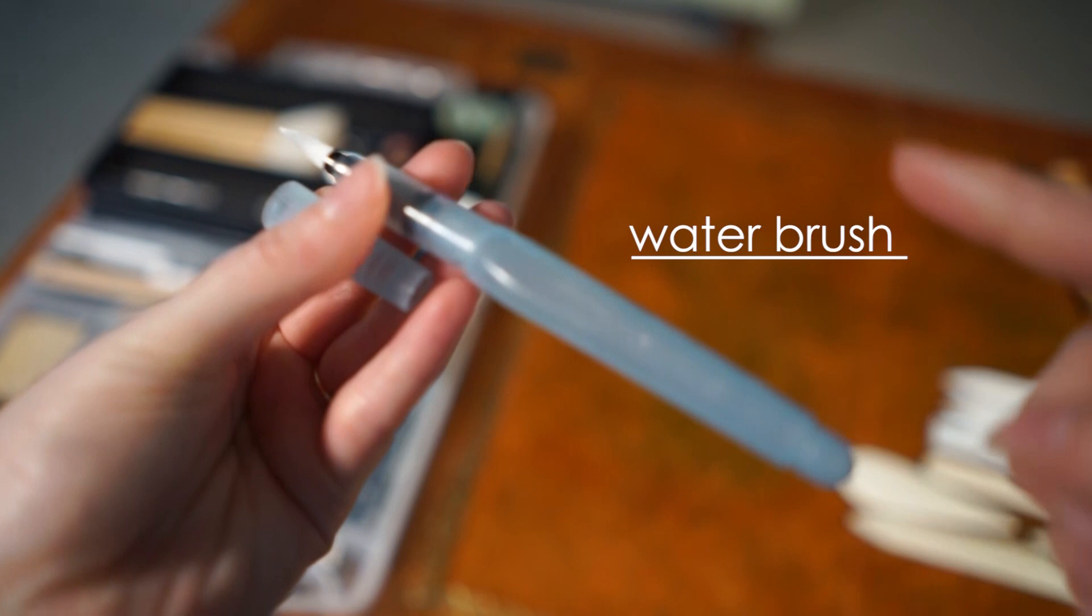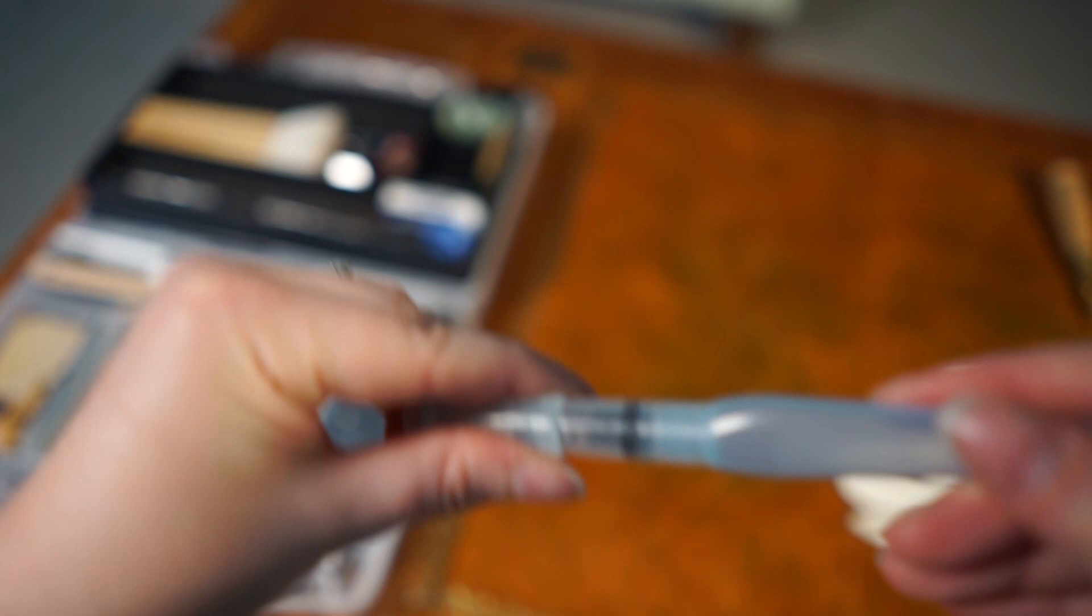And this is my water brush. You put the deionized water in here and you can screw off the lid to refill it. Conservators love using it for Japanese tissue repairs.